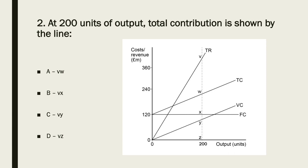Total contribution is total revenue minus variable costs. Looking at 200 units on the chart, total revenue is at V and variable costs is at Y. V minus Y is clearly the difference, so the answer must be C.